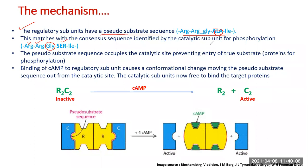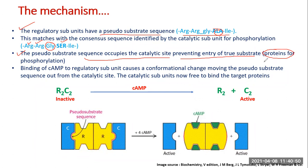The catalytic subunit recognizes the pseudo-substrate sequence as if it were a true substrate sequence and gets bound there. However, since it is not a true substrate sequence — there is no serine or threonine, only glycine — no phosphorylation takes place. The pseudo-substrate sequence occupies the catalytic site, preventing true substrate proteins from entering for phosphorylation.